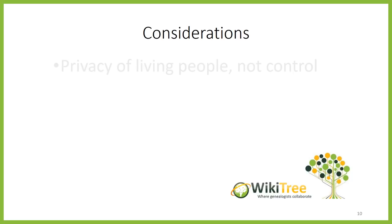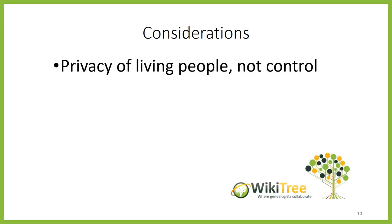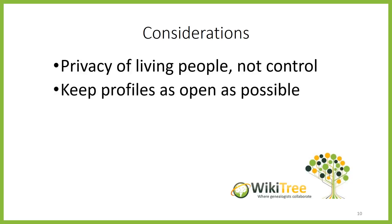It's important to remember that the purpose of the privacy settings is to protect the privacy of living people. It is not about control. If you are having a disagreement with a distant cousin about what should be included on your third great grandfather's profile, for example, you do not use privacy settings to restrict access. That goes against the WikiTree Honor Code. There are other ways of resolving these conflicts, which I'll touch on in the video on collaboration. The goal is to keep profiles as open as possible, while respecting privacy.